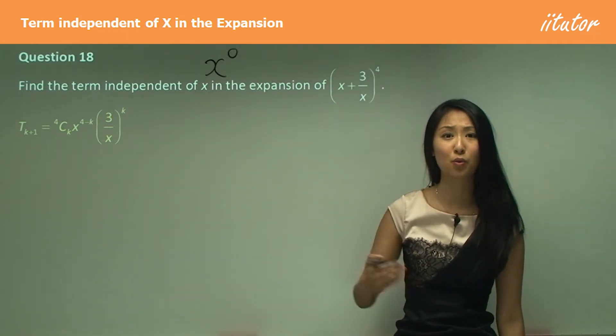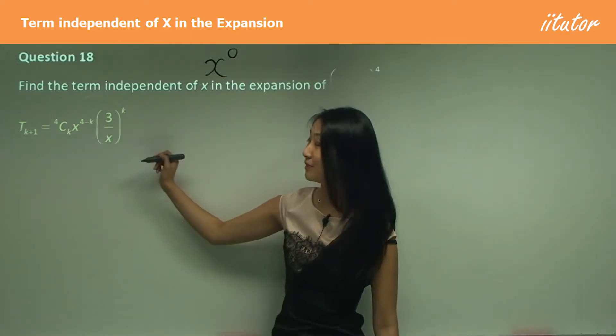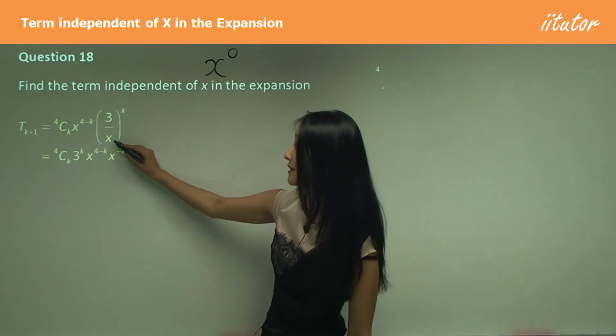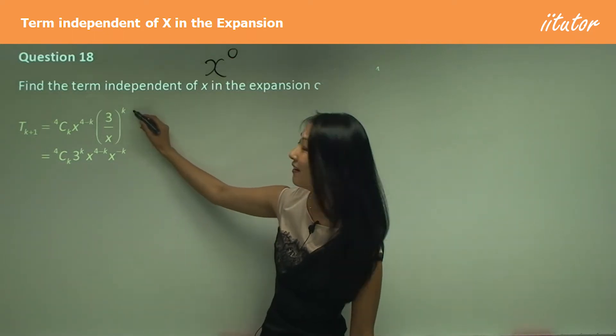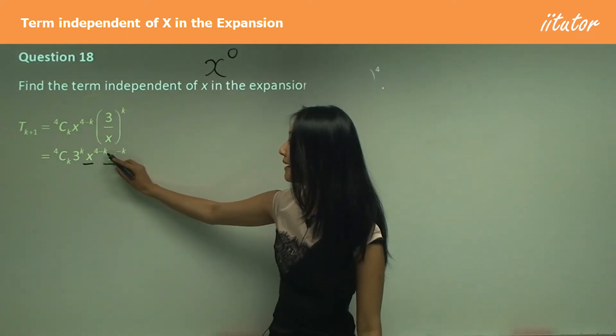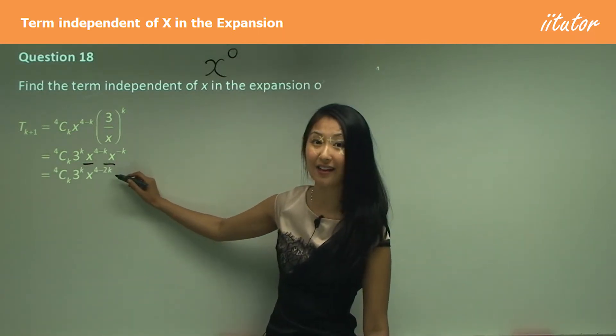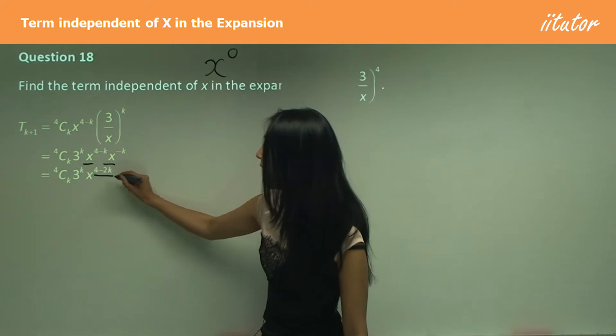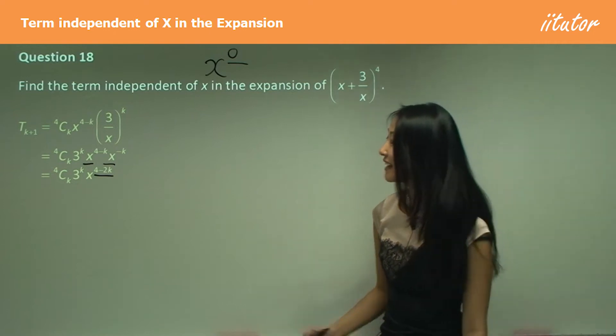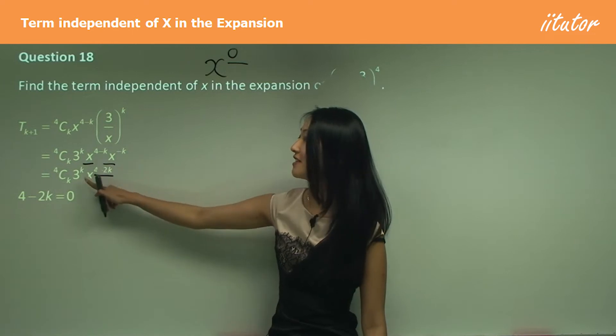We need to equate those indices so it equals 0, and to do that we need to simplify. This becomes 3^k and x^(-k) there. Those two are the same base, so we can add together the indices: 4 - k - k, so we have x^(4-2k).